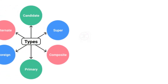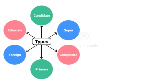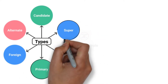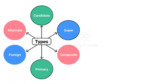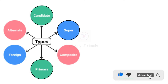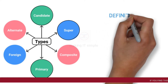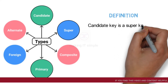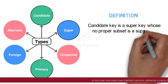In previous videos we covered the concepts of keys and learned two types: primary key and super key. In this video we will learn about candidate key. There are references regarding super key and primary key in this video, so for better understanding watch those videos — links are present in the description. Let us start with the definition: candidate key is a super key whose no proper subset is a super key.